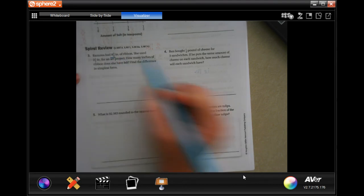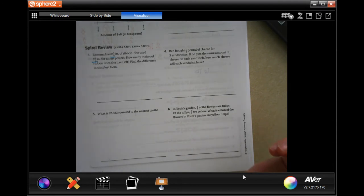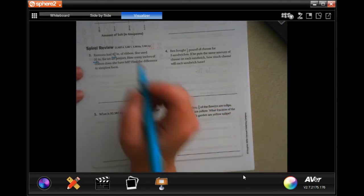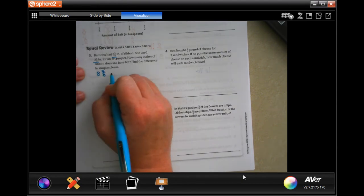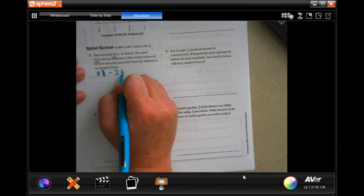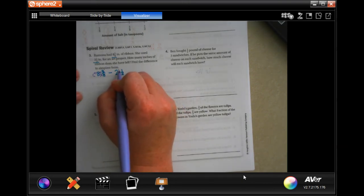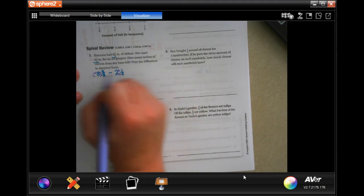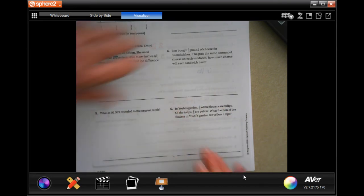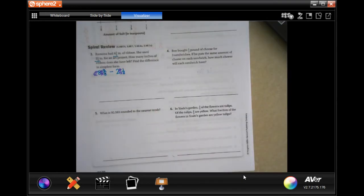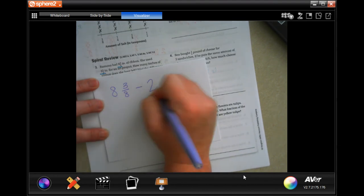Number three says, Ramona had eight and three eighths of ribbon. She used two and a half inches for an art project. How many inches of ribbon does she have left? Find the difference in simplest form. So we're probably going to have to reduce. We have eight and three eighths, and we're going to take away that two and a half. We're not going to do dead man. We are going to find the lowest common denominator for our two fractions. So, eight and three eighths subtract two and one half.